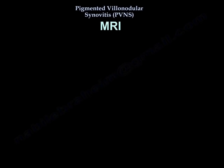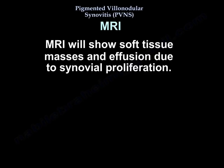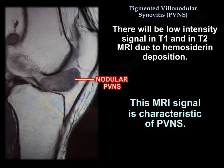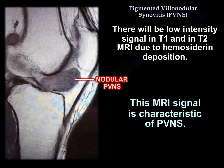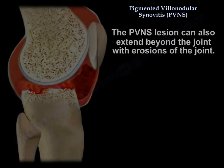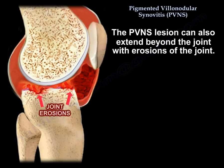On MRI, you will see soft tissue masses and effusion due to synovial proliferation. The lesion can be localized or nodular — you will find a nodule inside the joint, usually in the anterior knee. There will be low intensity signal on both T1 and T2 due to hemosiderin deposition, and this MRI signal is characteristic of PVNS. You can also see a diffuse process involving the posterior compartment, the anterior compartment, and the posterior compartment, and the lesion may extend beyond the joint with erosions.